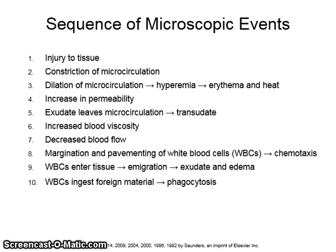The sequence of microscopic events is as follows: first is injury to tissue, followed by constriction of the microcirculation, followed by dilation of the microcirculation causing hyperemia, erythema, and heat. Next is increase in permeability, followed by exudate which leaves the microcirculation — this can be called transudate — an increase in blood viscosity, decreased blood flow, and margination and pavementing of white blood cells.